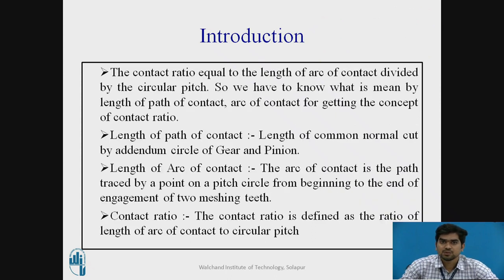The contact ratio is equal to the length of arc of contact divided by the circular pitch. We need to understand what is meant by the length of path of contact and arc of contact. The length of path of contact is the length of the common normal cut by the addendum circles of the gear and pinion. The length of arc of contact is the path traced by a point on the pitch circle from the beginning to the end of the engagement of two mating teeth.